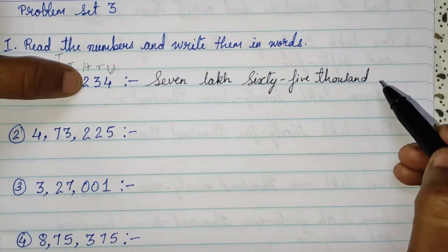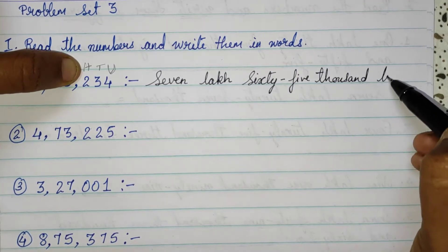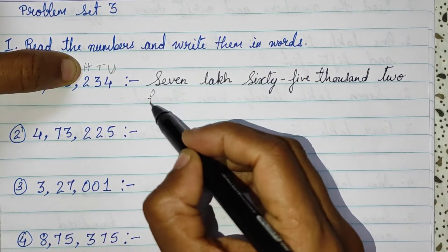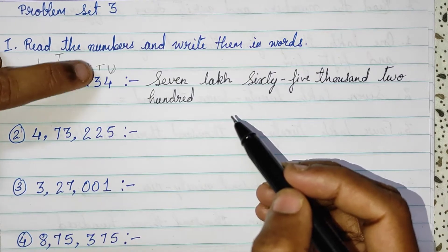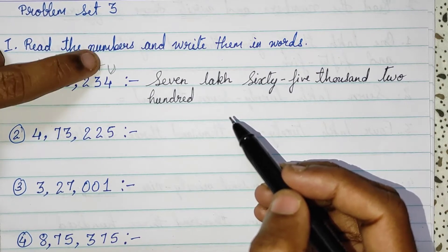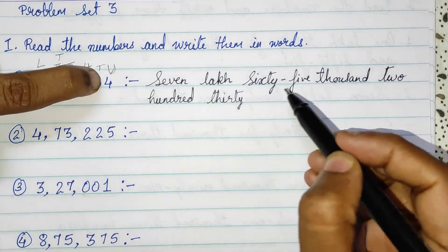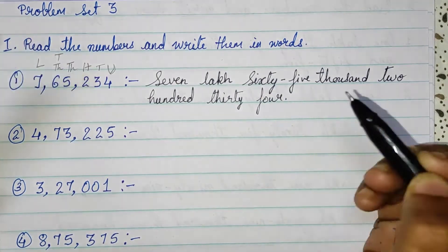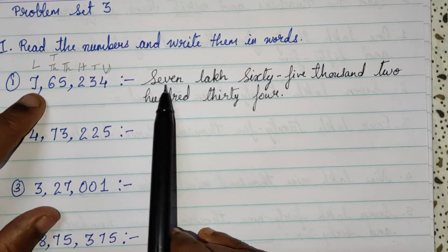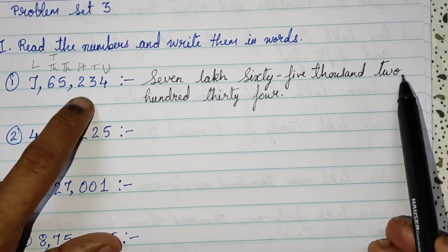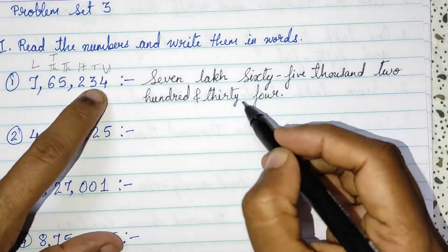And then 2, which is standing in 100's place, so 2 hundred. And then further 3 in tens place — 3 tens are 30. And unit place is 4. So your number name notation is 7,65,234.